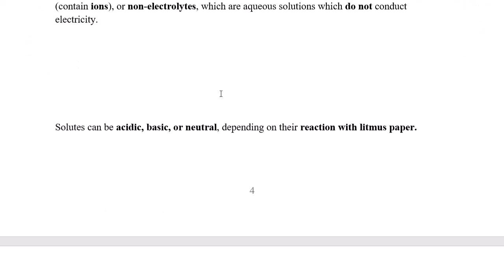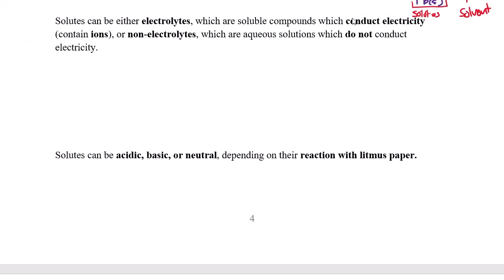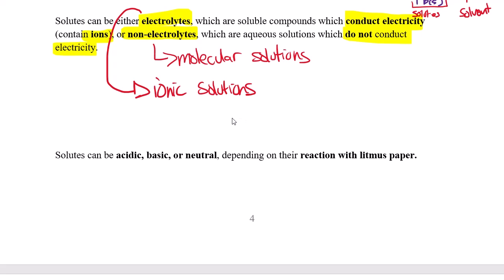Solutions can either be electrolytes which are able to conduct electricity. And they can do that because they contain ions. We'll talk a bit more about that in our next lesson. Or they can be non-electrolytes which don't conduct electricity. And they don't contain ions. And so in general, non-electrolytes will be molecular solutions. Because when they come apart, when they dissolve, they don't form ions. And electrolytes are going to be ionic solutions. Because when they dissolve, they dissociate into their individual ions. And we'll talk about that more in our next lesson.